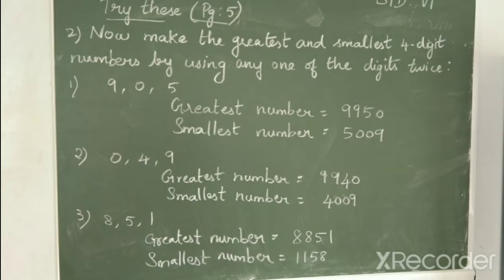In the next sum we also have 0: digits 0, 4 and 9. The greatest number formed is 9,940 and the smallest number formed is 4,009. Next one: 8, 5, 1. The greatest number will be 8,851 and the smallest number will be 1,158.